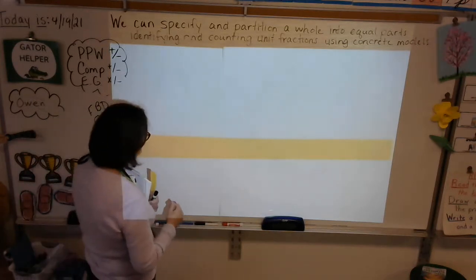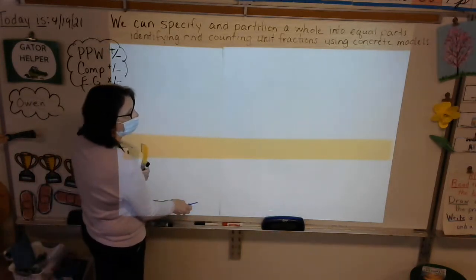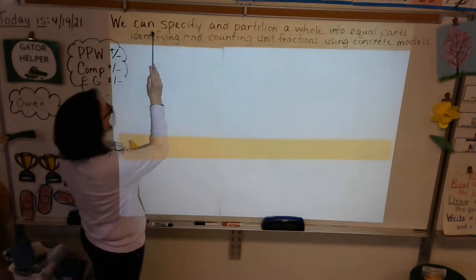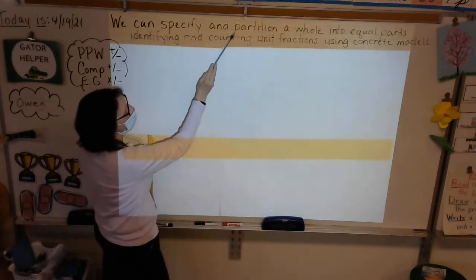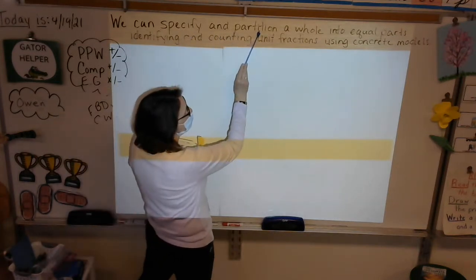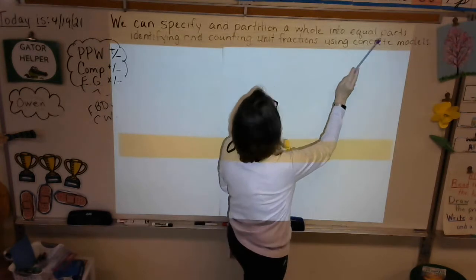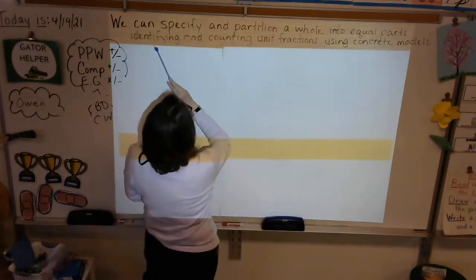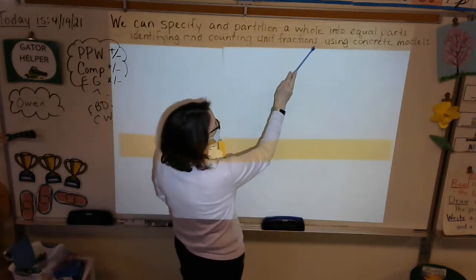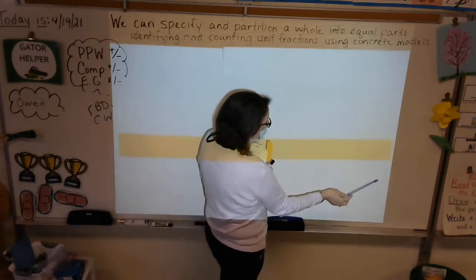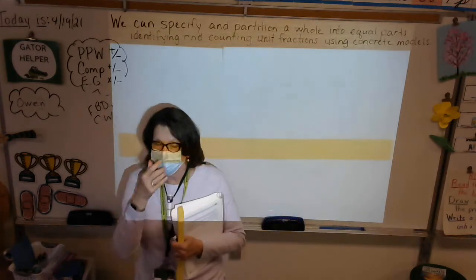Let's read our learning target. On the count of one, class: three, two, one — we can specify and partition a whole into equal parts, identifying and counting unit fractions using concrete models. Holy cow, that is a lot of information!